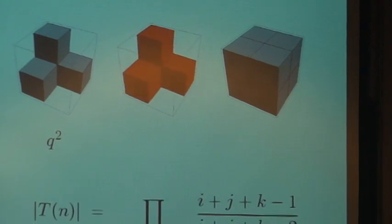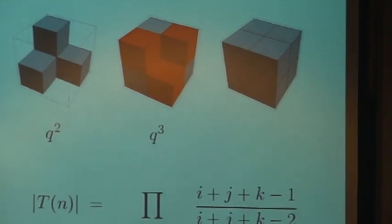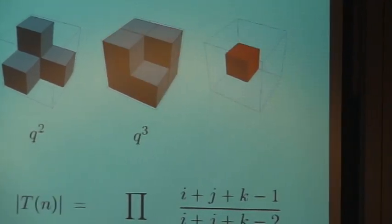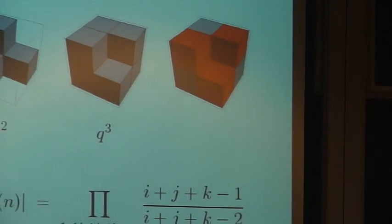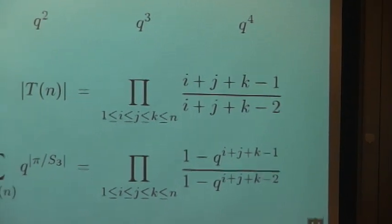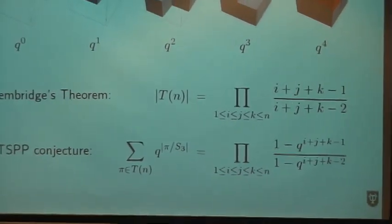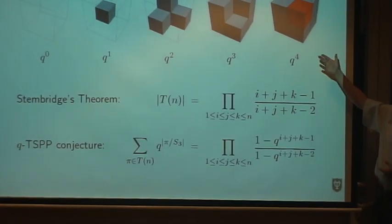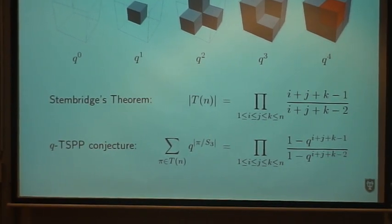Here we have one, two, three orbits, gives us q to the three. And we have one, two, three, four orbits, q to the four, and we sum these up.